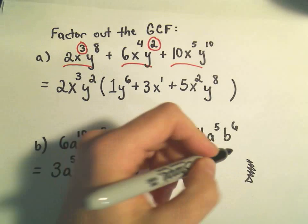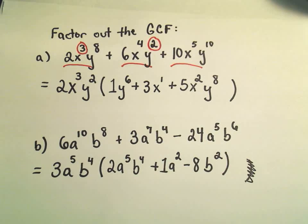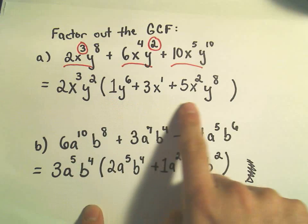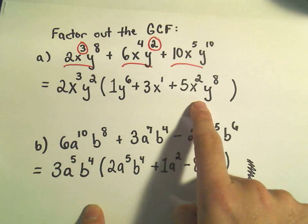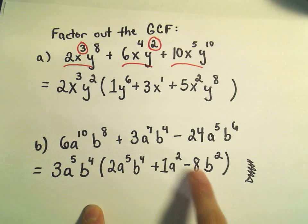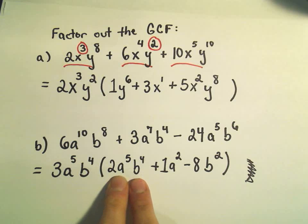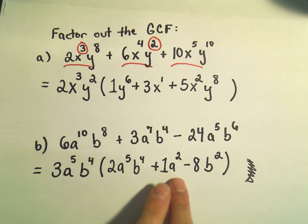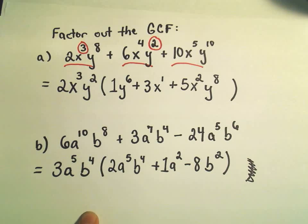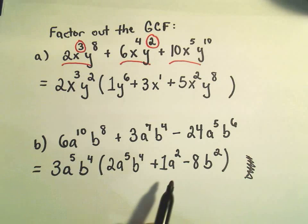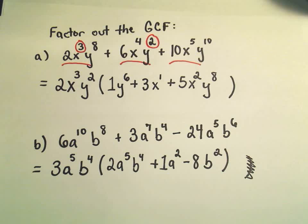So we have now factored out the greatest common factor. You can always check by looking at what's inside the parentheses and making sure there's nothing left that you could factor out. In our last example, the first term has both a and b, but the second only has a and the third only has b, so there's simply nothing else we can factor out. Even if you don't pull out the greatest common factor in the first step, you can always factor out a little bit more and eventually you will have factored out the greatest common factor.